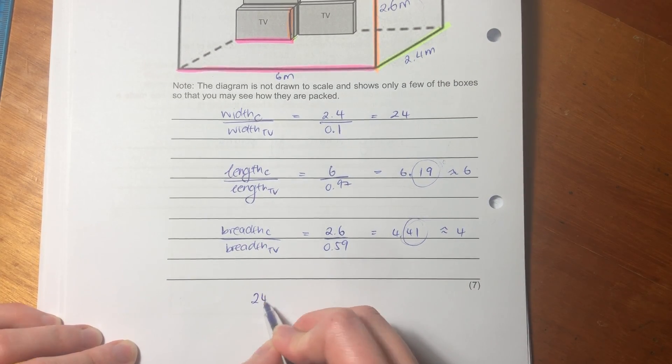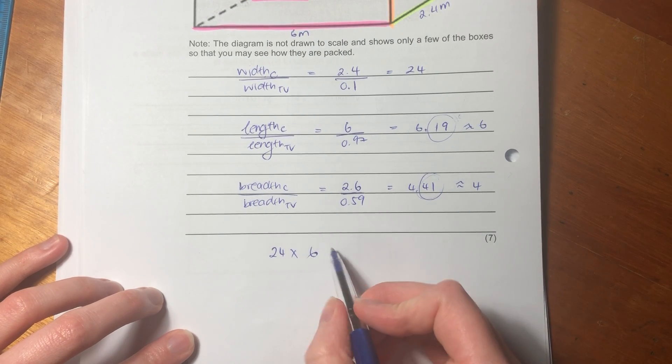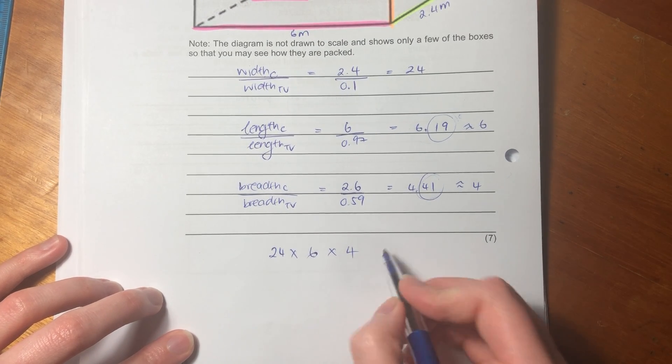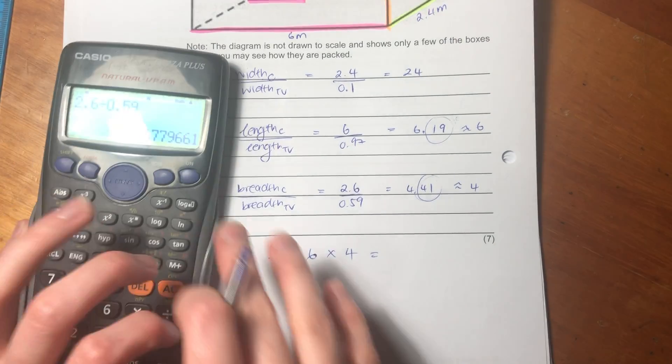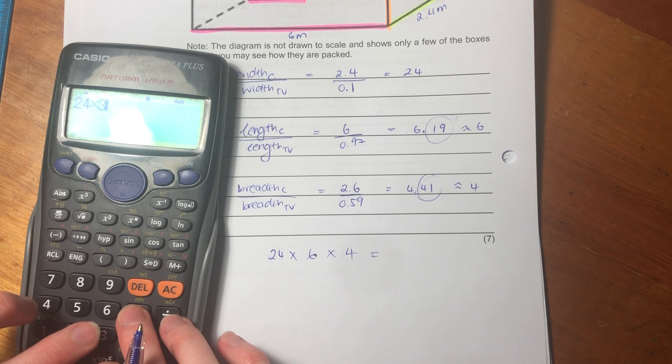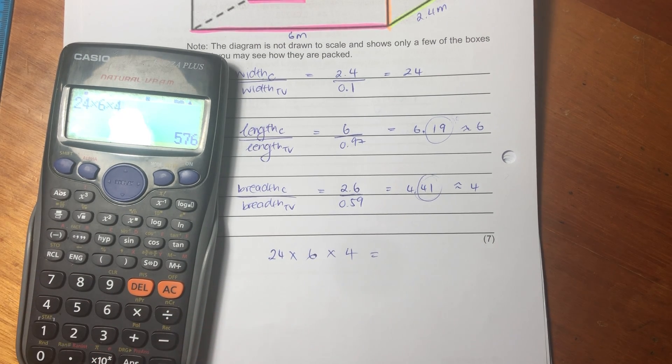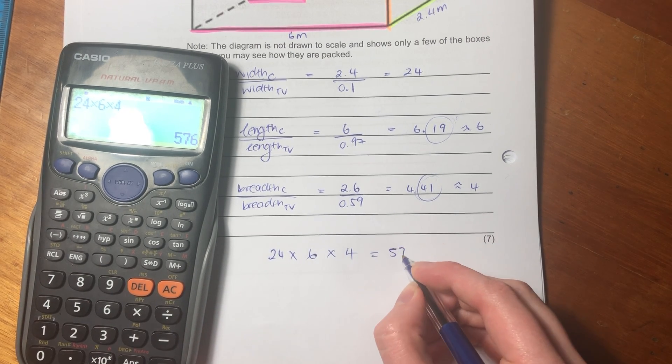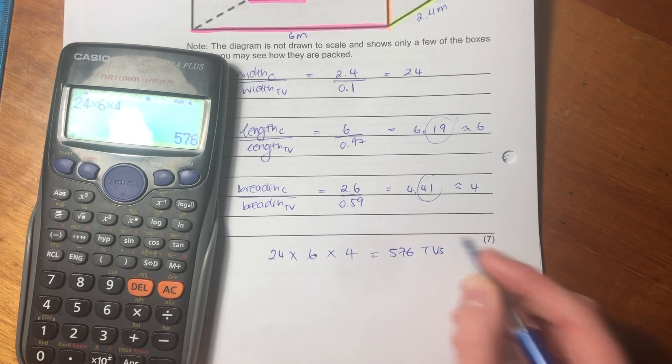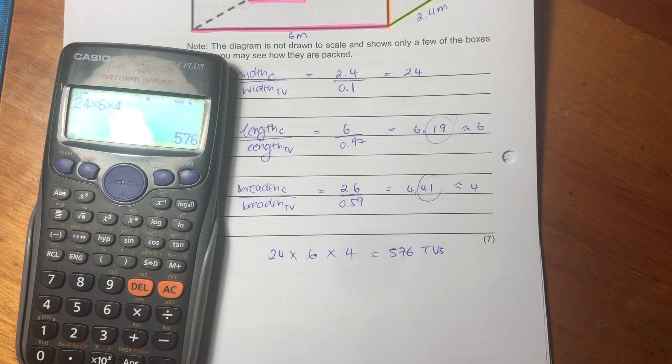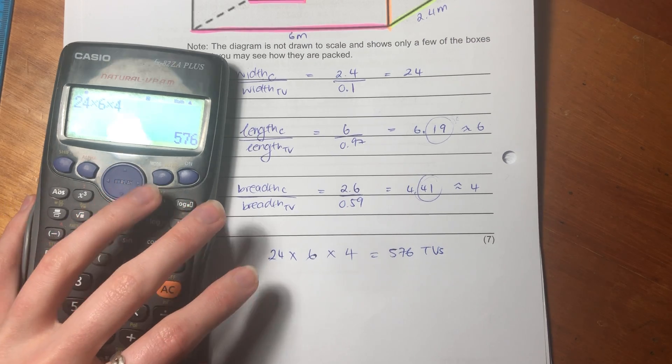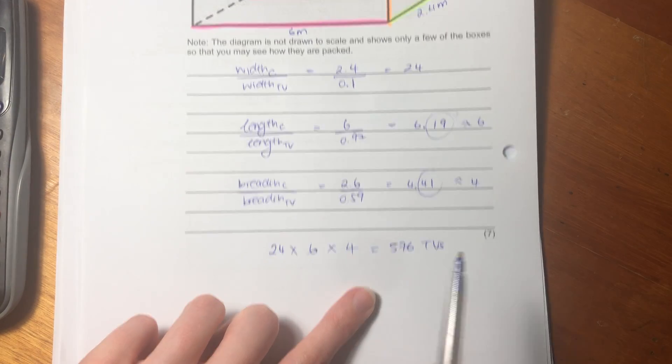So I'm saying, I want to take my 24 widths and times it by my 6 lengths, and then times it by my 4 breadth. And that will tell me how many TVs I can fit into this container. So it's quite an interesting thought pattern, but once you can visualize it, it really is a useful tool to use in these questions, but also just in life. Because sometimes we do have to pack bigger containers with smaller containers, and it's a good way of thinking about it.